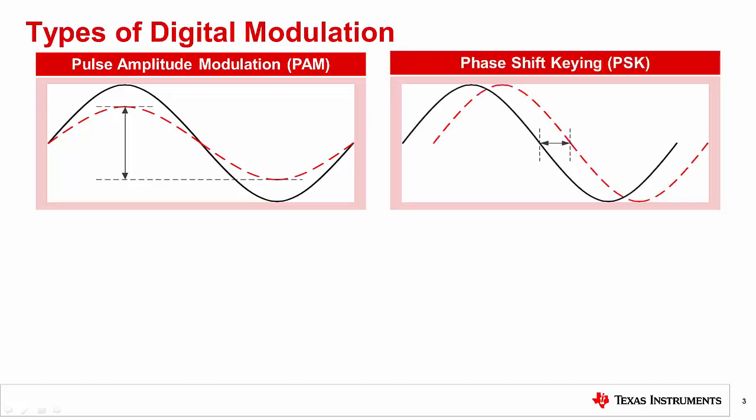Phase shift keying, or PSK, modulates only the carrier phase, which results in a constant carrier envelope that achieves good power efficiency. PSK has good noise tolerance and is used in LTE networks when the channel has low signal-to-noise ratio in order to achieve a sufficient bit error rate.